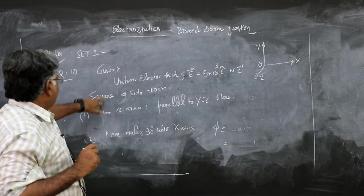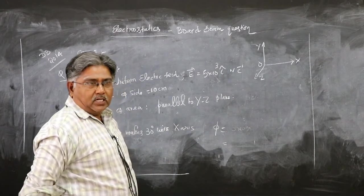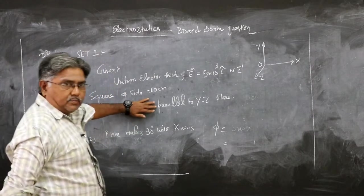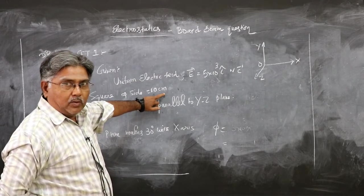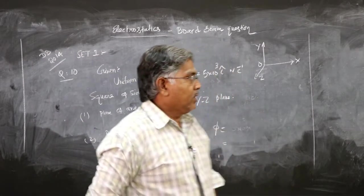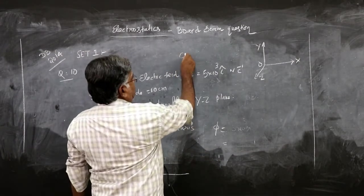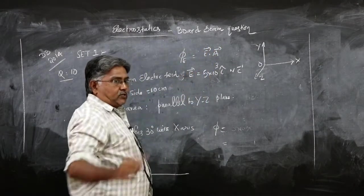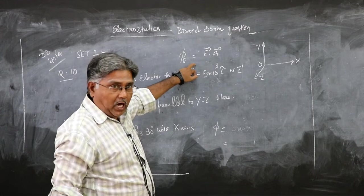First case: the electric field value is given as 5 × 10³ i cap Newton per coulomb. So the electric field is along the x-axis or parallel to the x-axis, and there is a square having side 10 centimeters. We will convert into meters or area into meter squared when we do the sum. We know the formula for electric flux φ_E as E dot A. For uniform electric field, E dot A is a dot product and electric flux is a scalar.